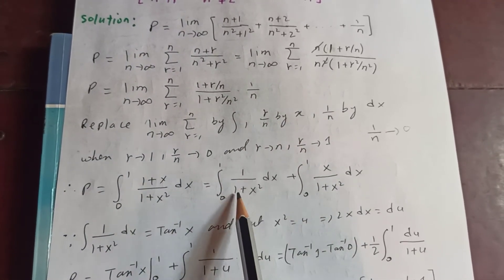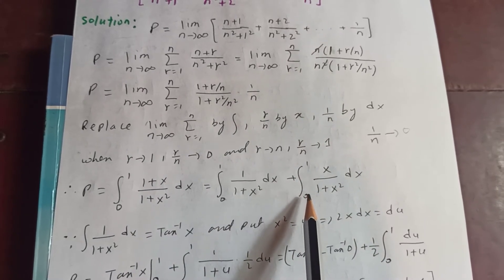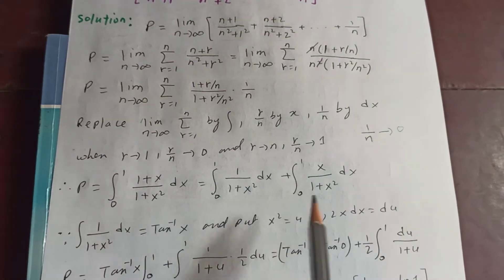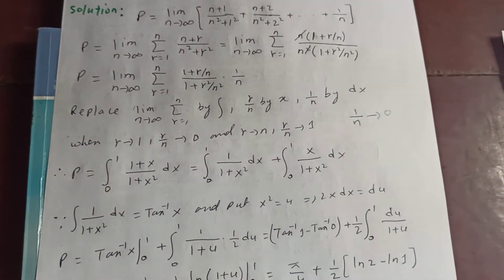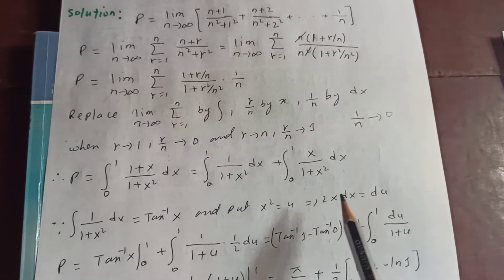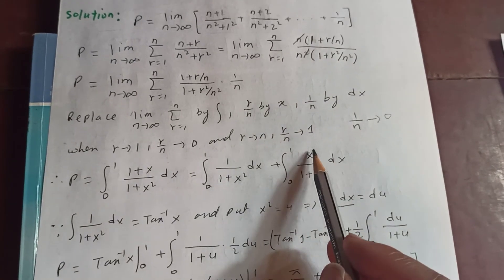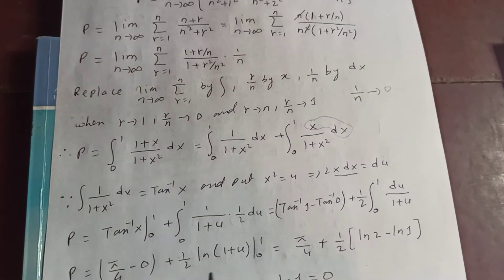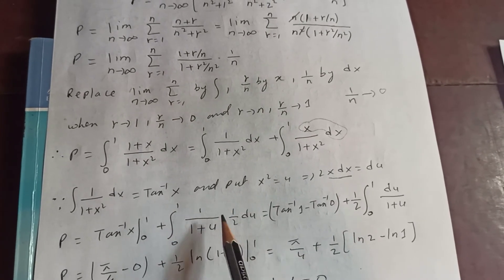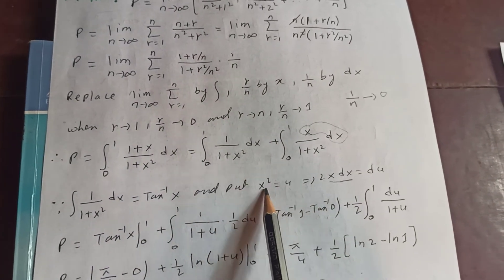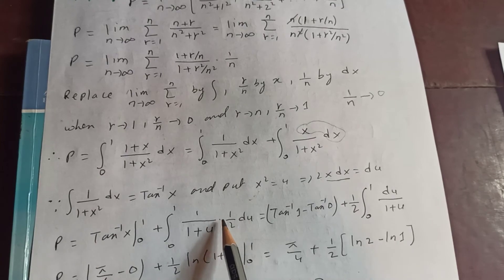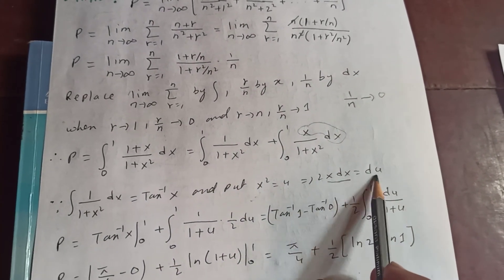Separating the integral: P equals integral from 0 to 1 of 1 over 1 plus x squared dx, plus integral from 0 to 1 of x over 1 plus x squared dx. The first integral gives tan inverse of x. For the second, we substitute x squared equal to u, so 2x dx equals du, meaning x dx equals du by 2. The limits remain 0 to 1.